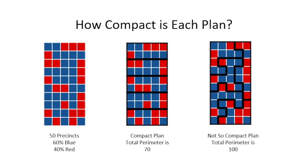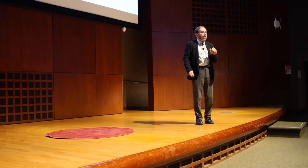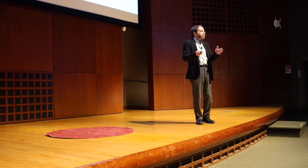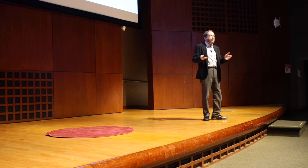For the compact middle plan, if you add up the perimeter of those five districts, the total perimeter is 70. But if you add up the perimeter of the more filigree plan, the total perimeter is 100. So we have a way of measuring whether or not plans are compact.